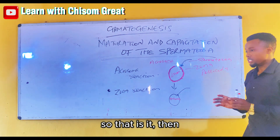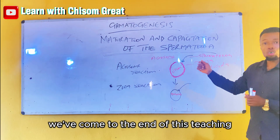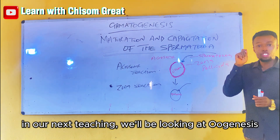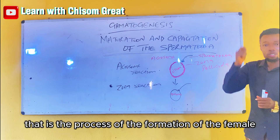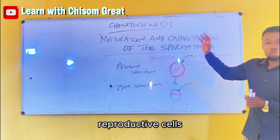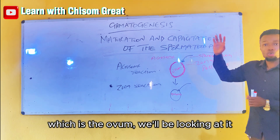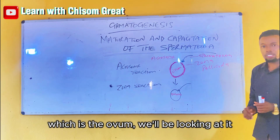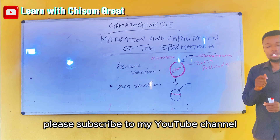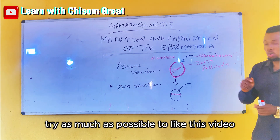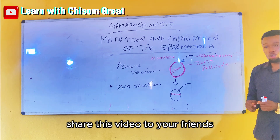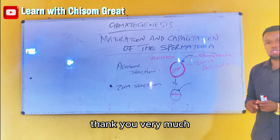That is it. We have come to the end of this teaching. In our next teaching, we will be looking at Oogenesis — that is, the process of the formation of the female reproductive cells, which is the ovum. I would like you to please subscribe to my YouTube channel, try as much as possible to like this video, also comment your questions, and share this video with your friends. Thank you very much.